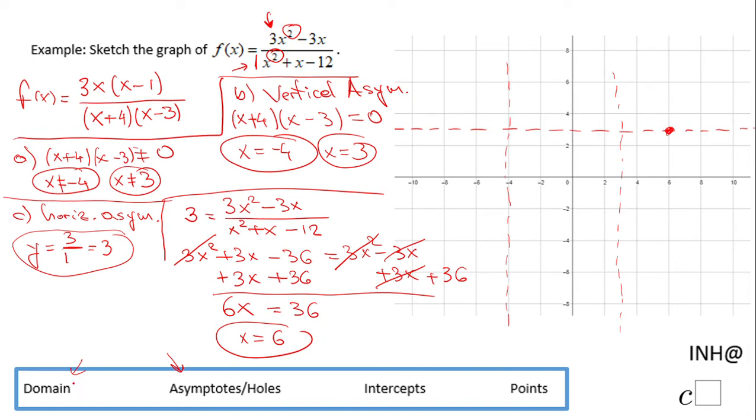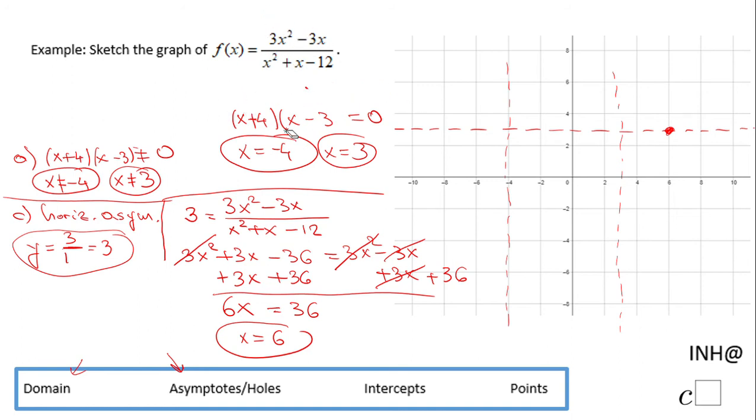So we finished domain and asymptotes, like I said, no holes. We can move to the next part, which is intercepts and more points, so we can get a good sketch of this graph.